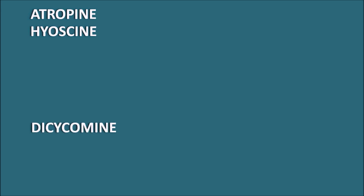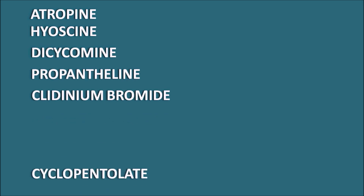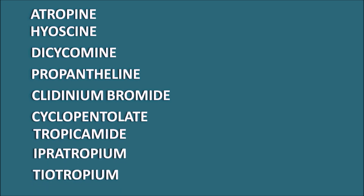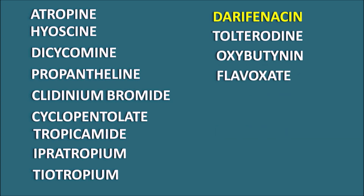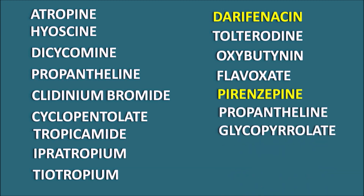Dicyclamine, propantheline, and clidinium bromide are acting like antispasmodics. Cyclopentolate and tropicamide act as mydriatics. Ipratropium and tiotropium are used as bronchodilators. Darifenacin, tolterodine, oxybutynin, and flavoxate are acting like bladder relaxants, while pirenzepine, propantheline, and glycopyrrolate act as anti-ulcer agents.